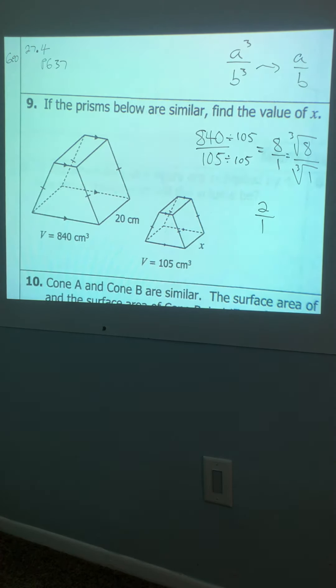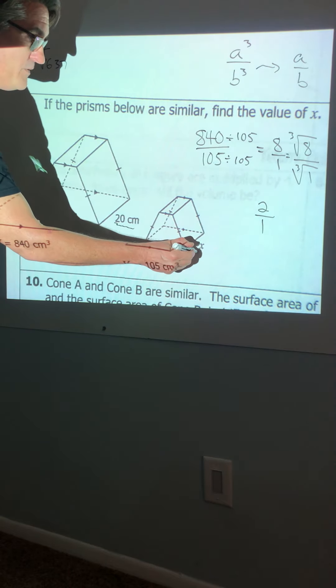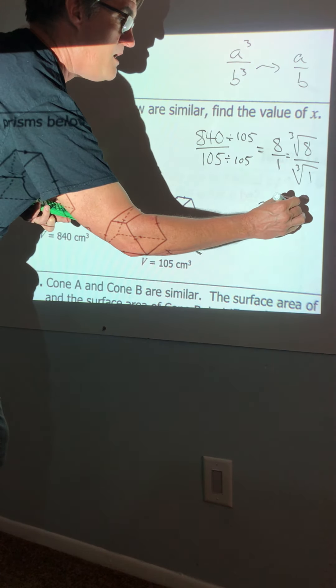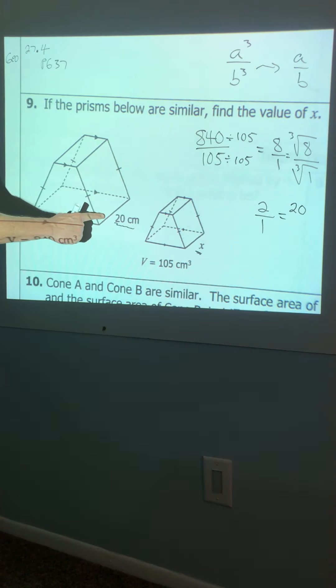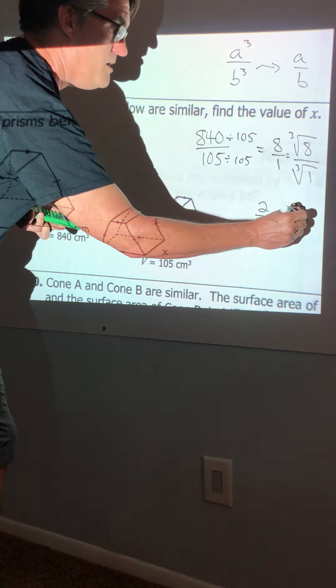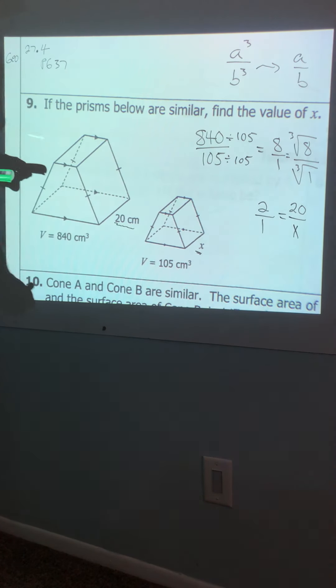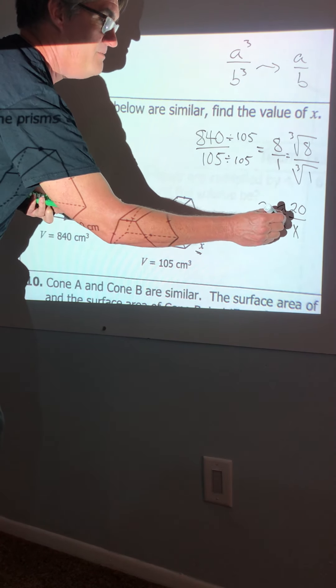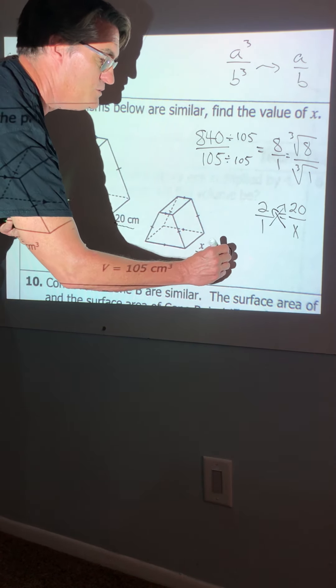Now that's the ratio of the parts. Two to one, come over here. 20 matches up with x. Who's the bigger shape? The 20 is from the bigger solid. So then it's got to go on the top. And then the x that matches up with it goes on the bottom. And then look at that, like we always have to do. Cross multiply, that comes up a lot.